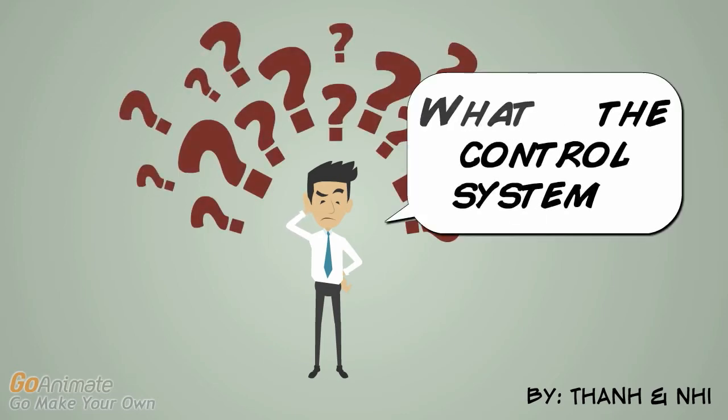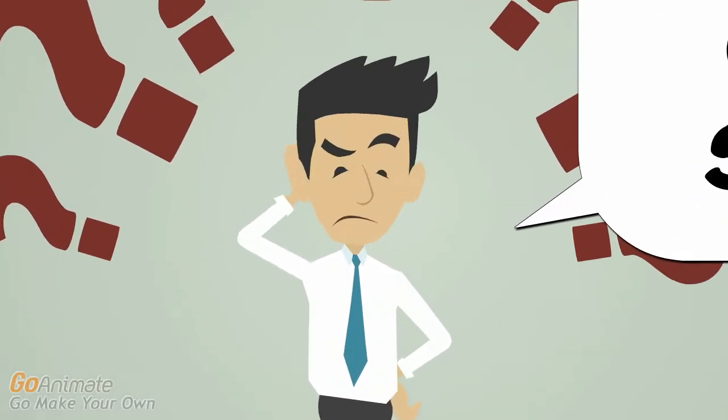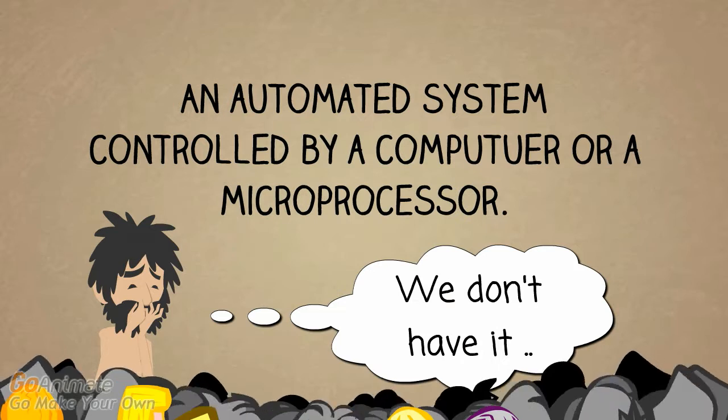First of all, we have to discover what is an automated system. An automated system controlled by a computer or a microprocessor.